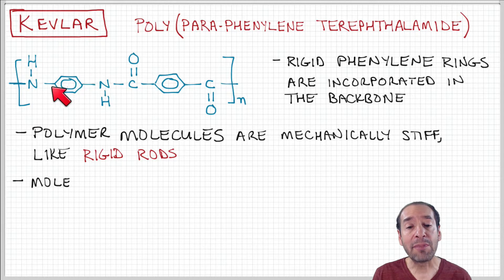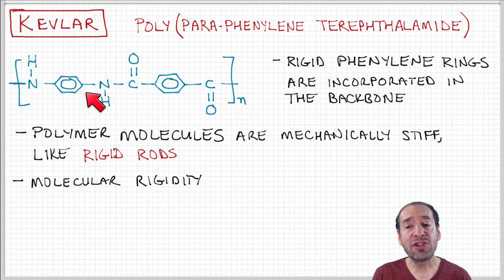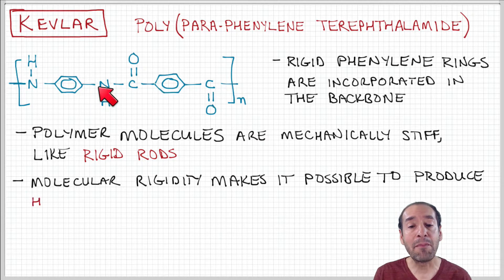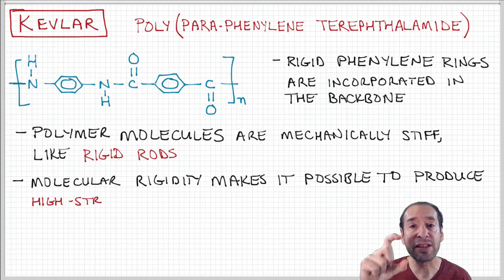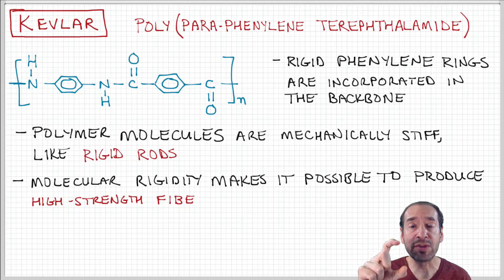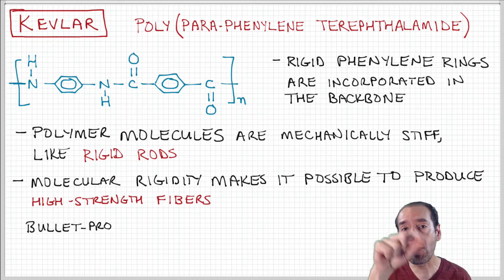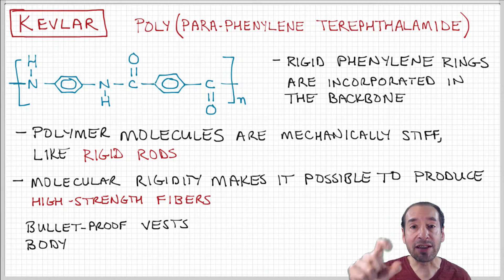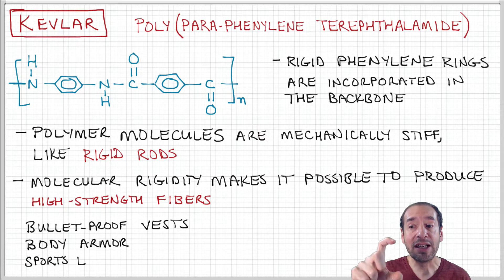Here they're actually part of the backbone, and this structure has a big impact on the mechanical properties of this material because it makes the molecule itself very rigid — almost like a rod-like structure. So no more floppy spaghetti strand; this is like a rigid rod.